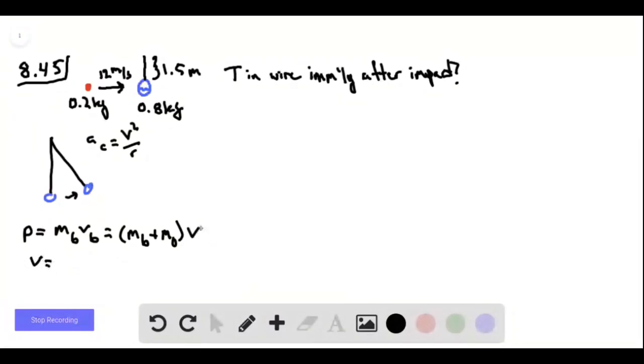So we find the speed of the ornament and missile together immediately after the impact is going to be the ratio of the mass of the bullet to the total mass times the initial speed of the bullet, and this is 4.5 meters per second.